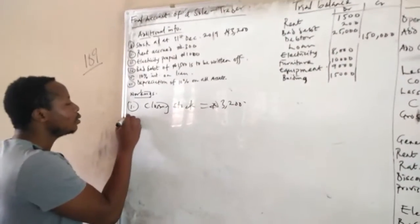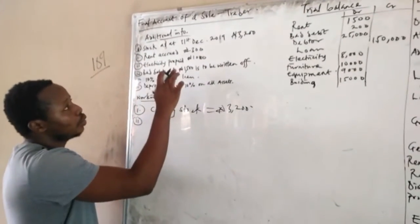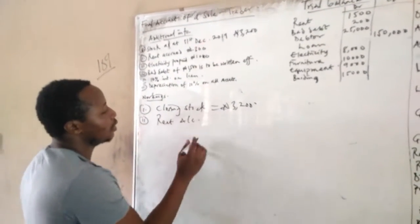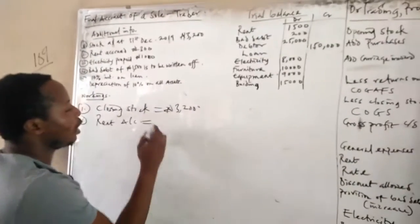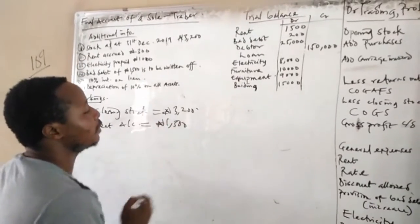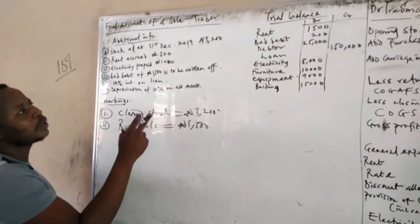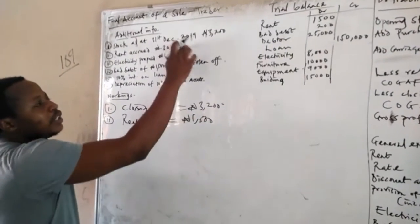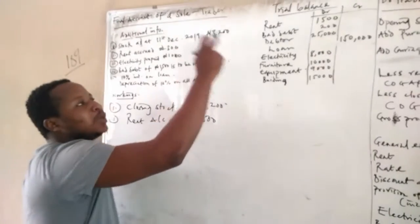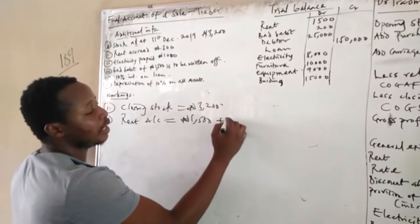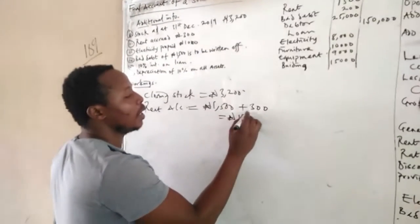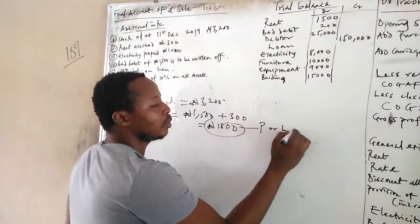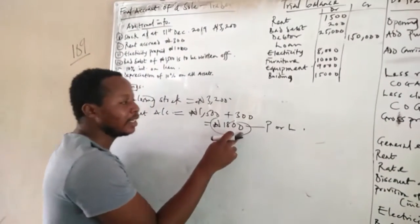The next one is rent accrued. Open a rent account. The rent given to you in the trial balance is 1,500. Since the additional information shows rent outstanding, you add the 300 owing to it, making the rent figure 1,800. This 1,800 goes to the profit or loss account under expenses.